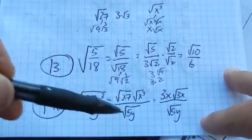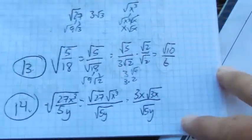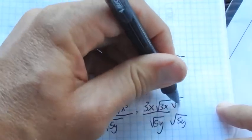So I've taken out as many of the squares as I can. Now, I've got to get rid of this radical in the denominator. I'm not allowed to leave it there. So I am going to multiply by root 5y over root 5y.